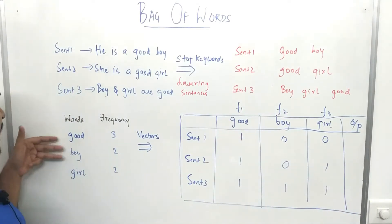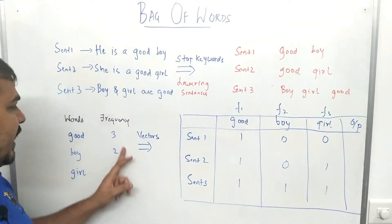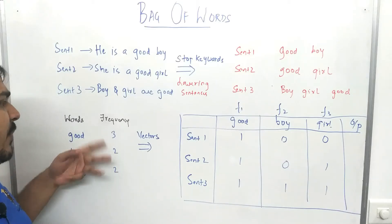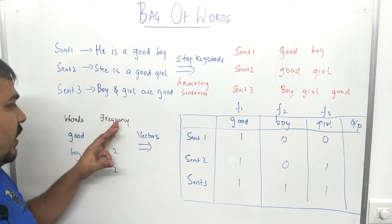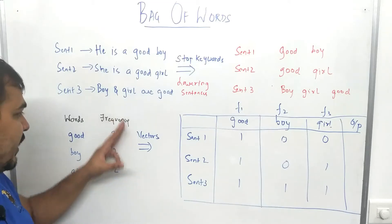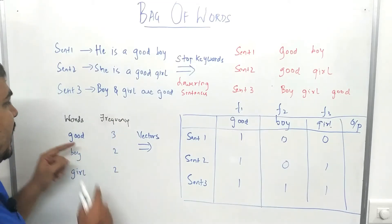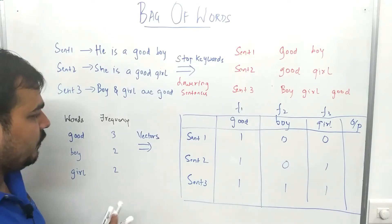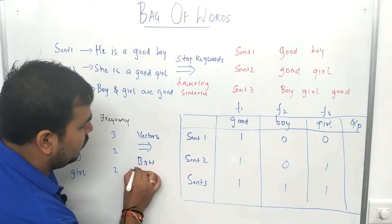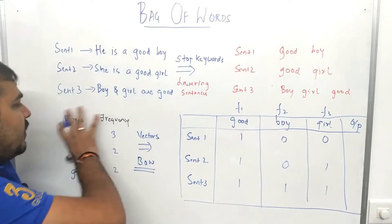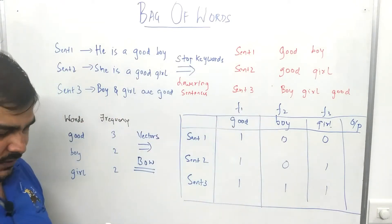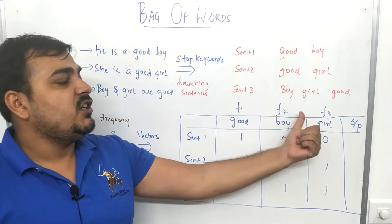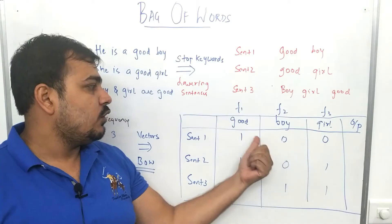Once we calculate the frequencies, they may not be in order, so we always sort them in descending order. After sorting, we have 'good', 'boy', and 'girl'. Now this step is called Bag of Words — we are converting this representation into vectors. These words become our features: f1 is 'good', f2 is 'boy', and f3 is 'girl'.